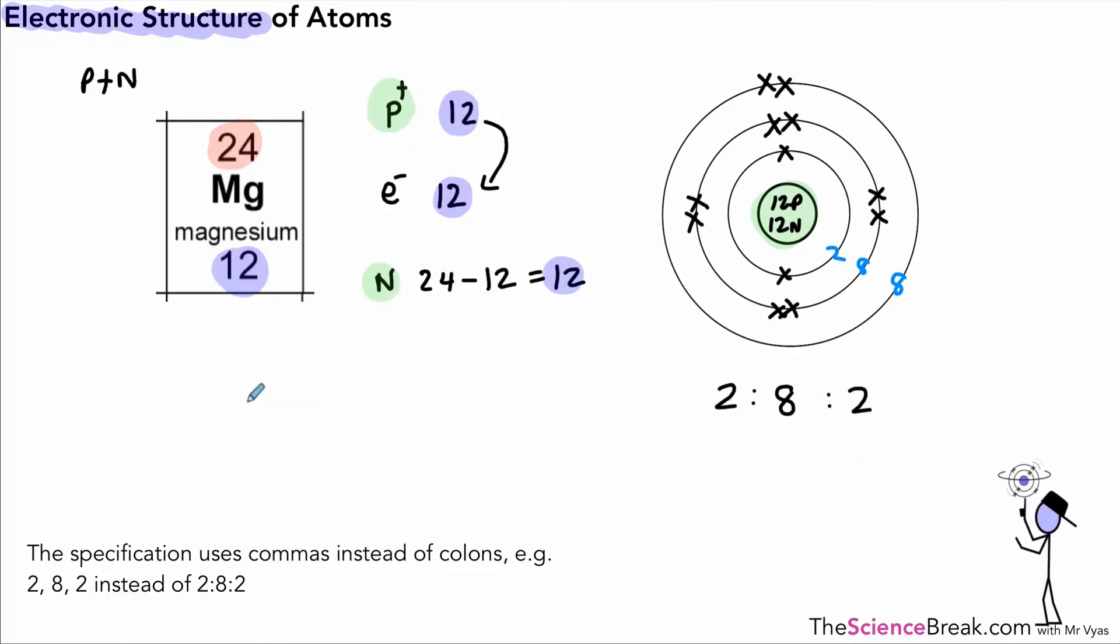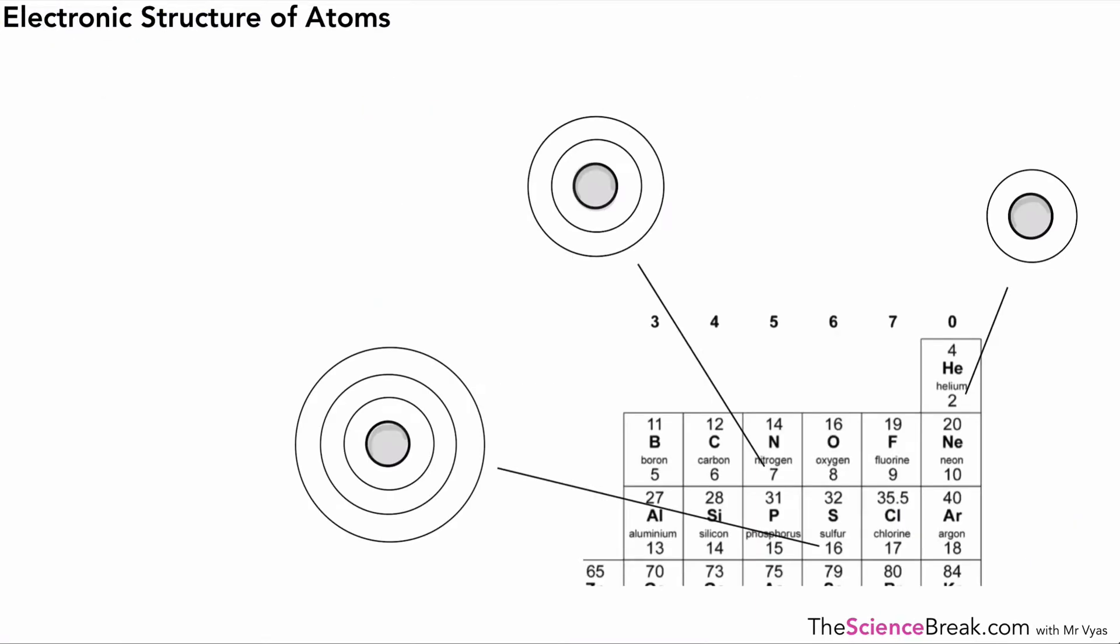So this is another way of writing out the electronic structure. If we were to practice that for a few more, here I've got a small part of the periodic table and highlighted three more elements. We can have a go at drawing the electronic structure on a diagram and writing it out. For the first one, helium, we've got a proton number of two, that means electrons we have two. I'm not too interested in doing the protons and neutrons in the nucleus, just the electronic structures.